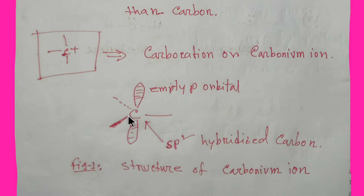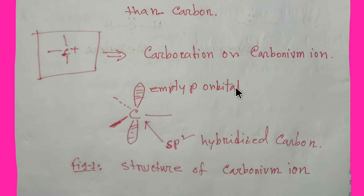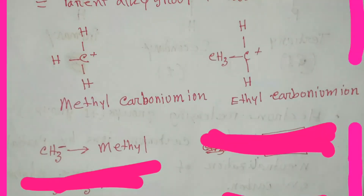In carbocations, this carbon is sp2 hybridized. That is why it is planar and will have an empty p orbital where any nucleophile can attack. So in carbocations, carbon is sp2 hybridized and there is an empty p orbital where a nucleophile can attack.